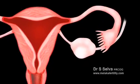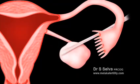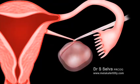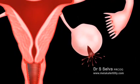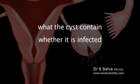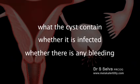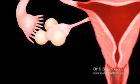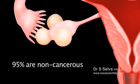If a cyst is growing on a stem from an ovary, the stem can become twisted. This is called torsion. Torsion stops the blood supply to the cyst and causes a lot of pain in the lower abdomen. The cyst may burst, causing sudden severe lower abdominal pain. The pain felt depends on what the cyst contains, whether it is infected, or whether there is any bleeding. Very occasionally, an ovarian cyst is an early form of ovarian cancer. However, ovarian cysts are very common and about 95% are non-cancerous.